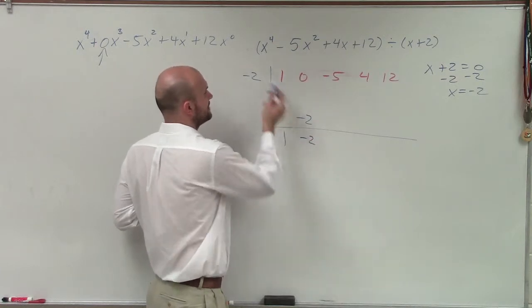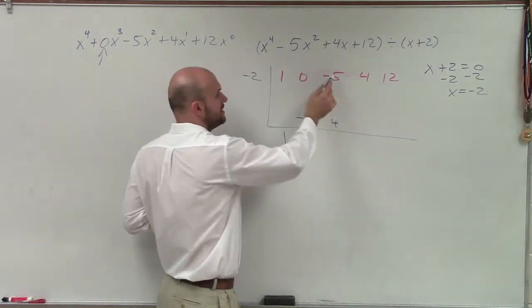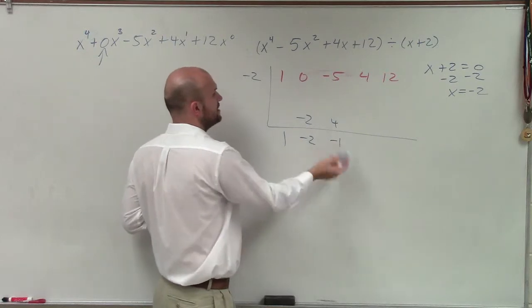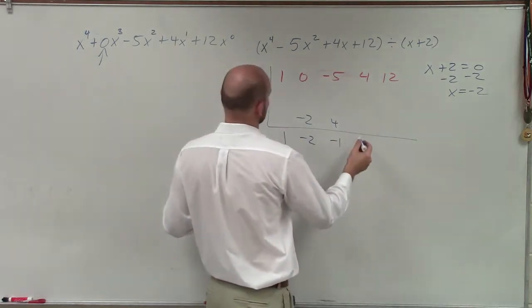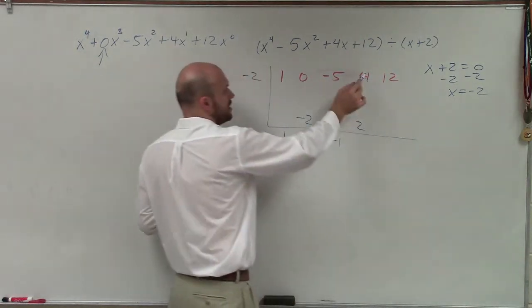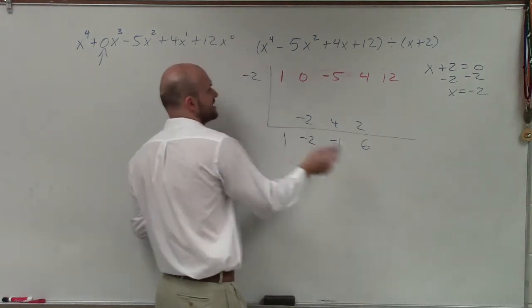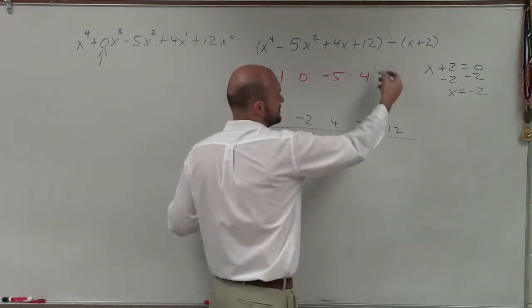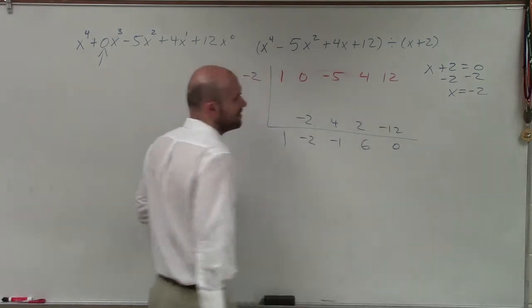0 plus negative 2 is negative 2. Negative 2 times negative 2 is a positive 4. Negative 5 plus 4 is negative 1. Negative 1 times negative 2 is going to be a positive 2. 4 plus 2 is going to be positive 6. 6 times negative 2 is going to be negative 12. 12 plus negative 12 is 0.